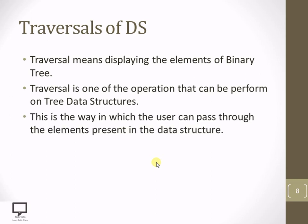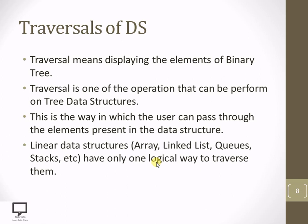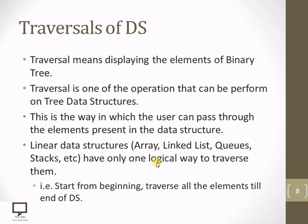This is the way in which the user can pass through all the elements which are present in the data structure. For example, if I am having a linear data structure like array, linked list, queue, stack, etc., then those linear data structures can be traversed in a single way only — where we start from the beginning of the data structure and we traverse all the elements till the end. This is the typical way of traversal of linear data structures.